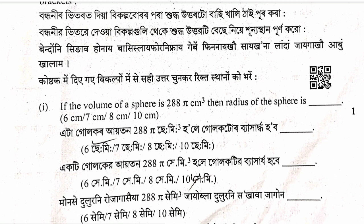Using volume of sphere formula: 4 by 3 pi r cubed equals 288 pi. Therefore r cubed equals 288 into 3 by 4 equals 216. Therefore r equals 6 centimeters.